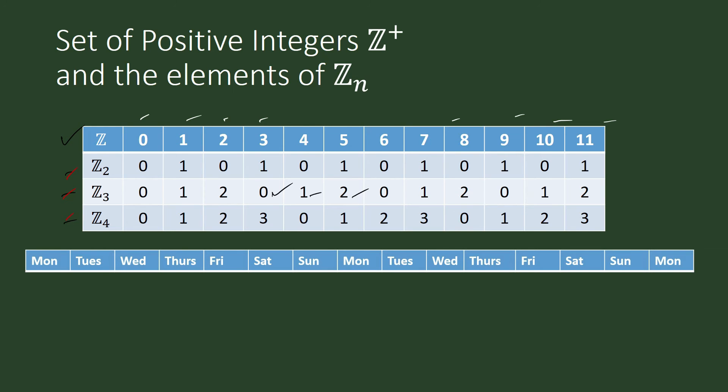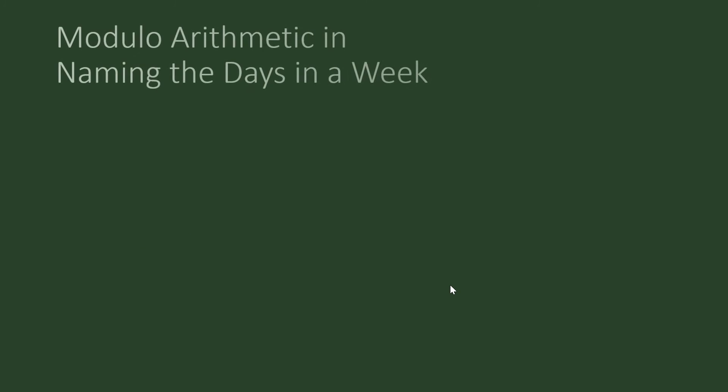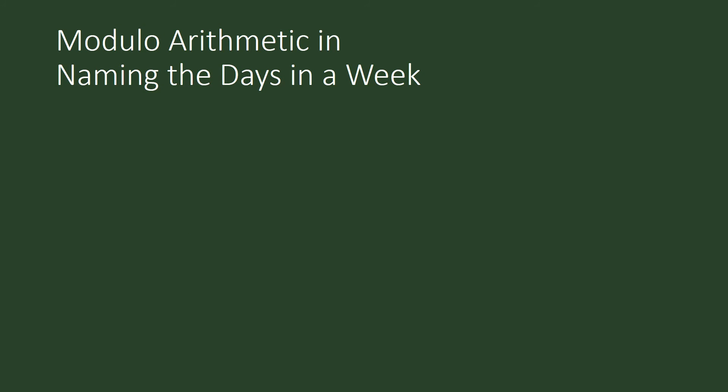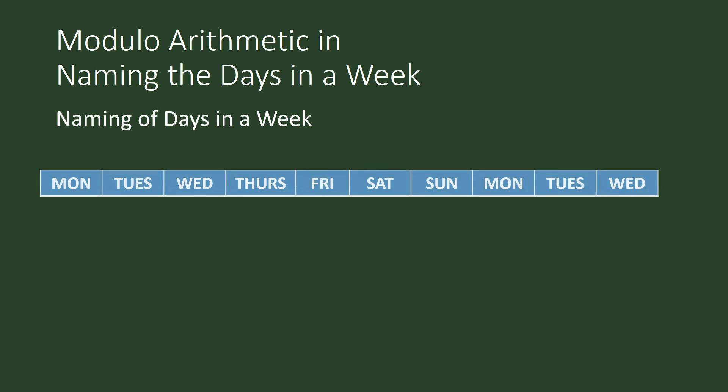That is what we see when we are naming the days of the week. Monday, Tuesday, Wednesday, and so on. After Sunday, we don't have another day. We don't have a different name for the day after Sunday. We begin again with Monday. How we name the days of the week is comparable with modulo n arithmetic. There is a cycle to it.